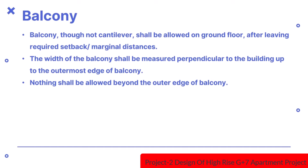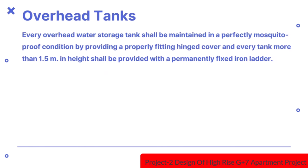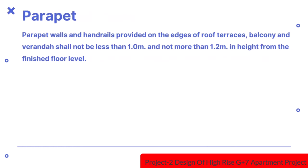The width of the balcony shall be measured perpendicular to the building up to the outermost edge of the balcony. Nothing shall be allowed beyond the outer edge of the balcony. Every overhead water storage tank shall be maintained in a perfectly mosquito-proof condition by providing a properly fitted hinged cover, and every tank more than 1.5m in height shall be provided with a permanently fixed iron ladder.